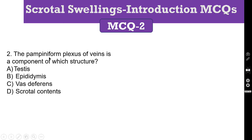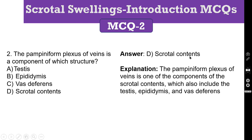MCQ number 2: The Pampiniform Plexus of Veins is a component of which structure? A. Testis, B. Epididymis, C. Vas Deferens, D. Scrotal Contents. The correct answer is D, Scrotal Contents. The Pampiniform Plexus of the Vein is one of the components of the scrotal contents, which also include Testis, Epididymis, and Vas Deferens. It is not part of Testis, Epididymis, or Vas Deferens specifically — it is one of the contents of the scrotum.